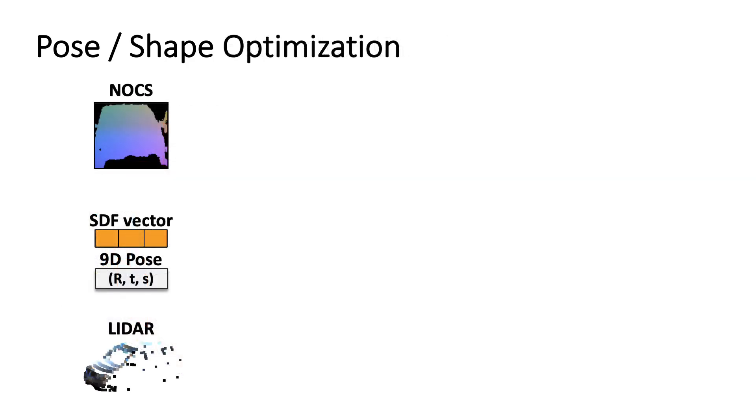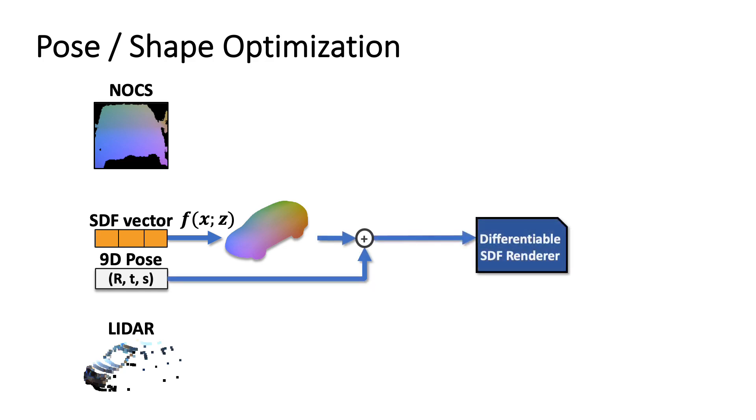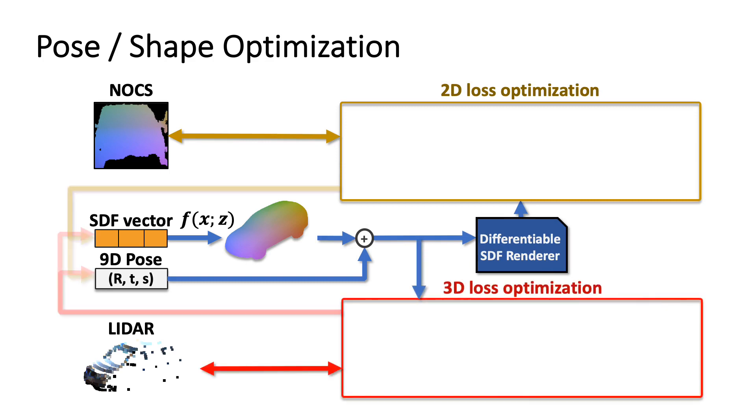Given the initial pose and shape estimates, we transform the predicted object and use it to iteratively refine the estimate through differentiable visual and geometric alignment.